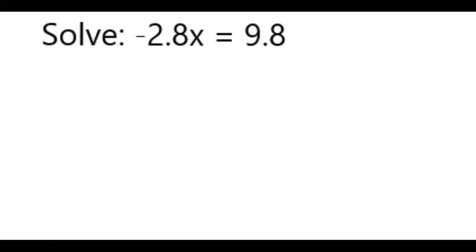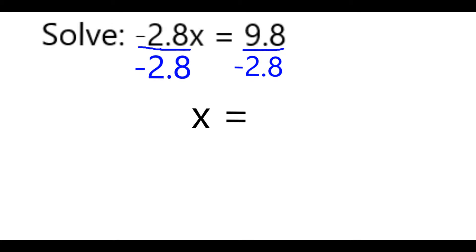Solving this equation means I want to find the value of x which makes this statement true. So what I need to do is undo the multiplication by negative 2.8, and I can do so through division. If I divide by negative 2.8 on the left side, the numerator and denominator cancel out, leaving me with x. Then on the right side I need to do the division to find out what x is equal to.